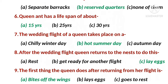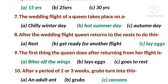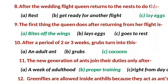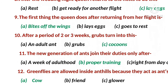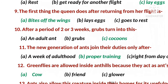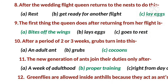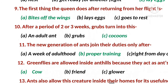MCQ 7: The wedding flight of a queen takes place on - the right option is B - a hot summer day. MCQ 8: After the wedding flight, the queen returns to the nest to do this - the right option is C - lay eggs. That is, after returning from the wedding flight, she lays eggs.